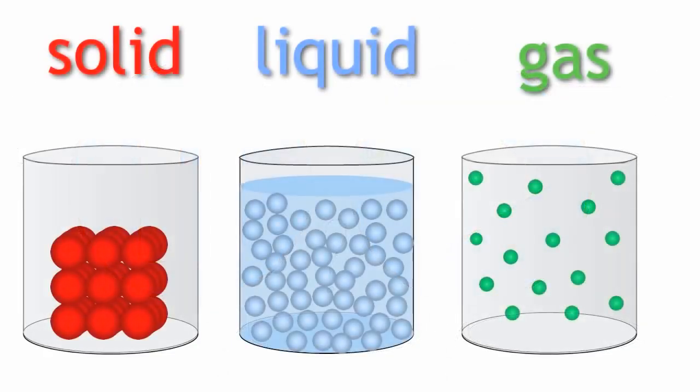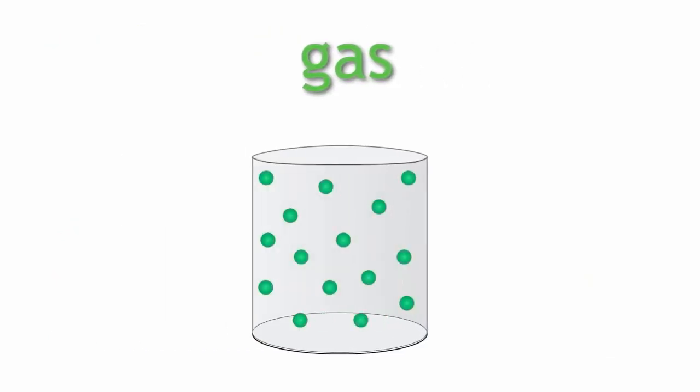The answer is the particles in a gas are spaced out and move about very quickly in random directions. Did you get it right?